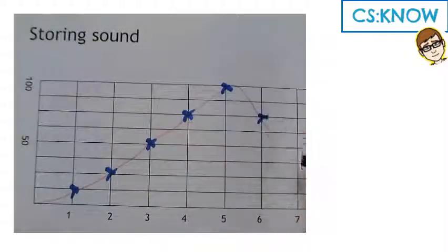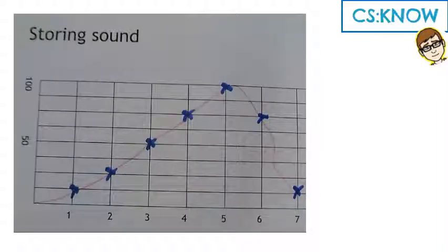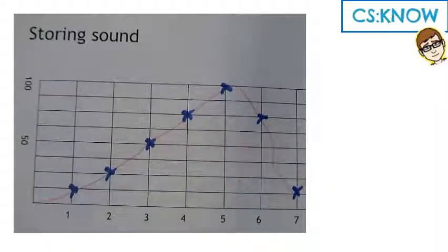So computers can only store digital values. So what we have to do is sample. So as these blue crosses point out, we convert an analogue recording to digital data by sampling the amplitude of the wave at regular intervals. So in this one, it's every one second along the bottom. Every one second, we take a reading of the amplitude of the wave. How high is the wave at that particular point? And we just record that point.